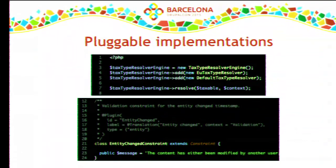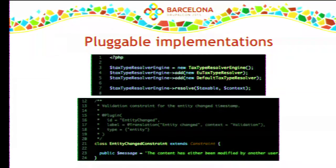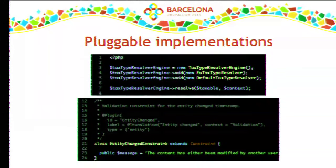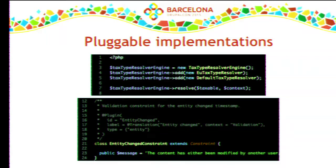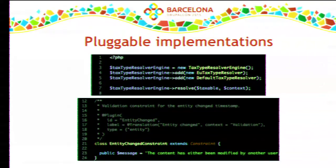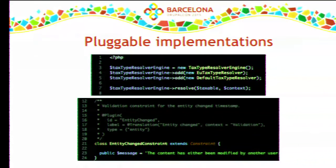Drupal 8 has one additional extension pattern: plugins. A plugin is a class that gets configuration from somewhere else — usually a config entity edited through the UI. A plugin is not registered in the container; it has an annotation on top. Drupal decided to use a plugin to integrate Symfony validators — the plugin extends the Symfony validator library class to make it discoverable and make it work. This is one additional pattern that might be expected from integrators when configuration comes from outside.